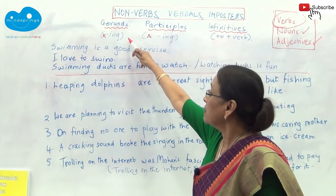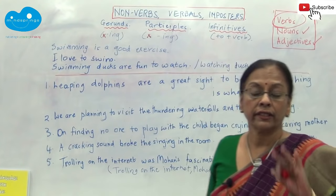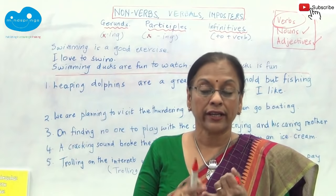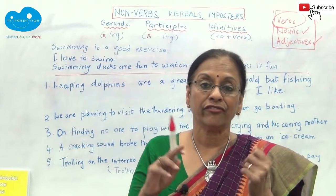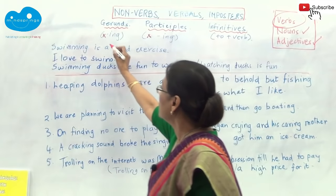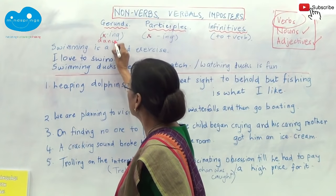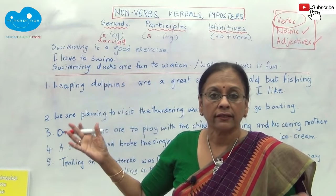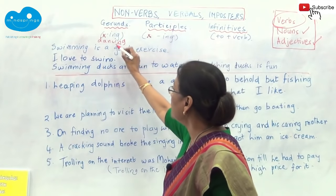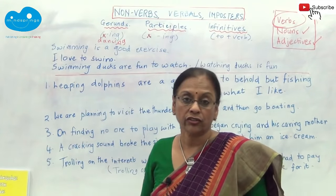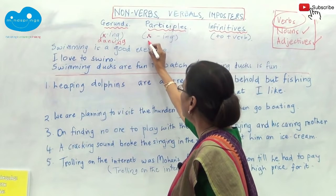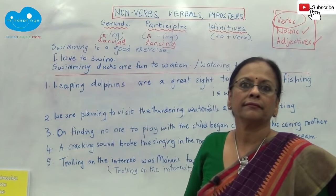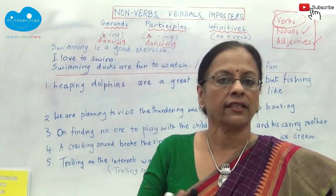Now, what are these three? Gerunds, participles, and infinitives — it's a set of three imposters pretending to be verbs. How are they made? If I write 'dancing,' it's an -ing word and therefore that's a gerund. A gerund is always identified by the -ing ending. A participle can also be 'dancing' — so you see the confusion: the same word. And an infinitive will be 'to dance': to plus verb.